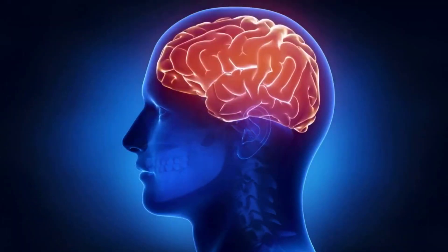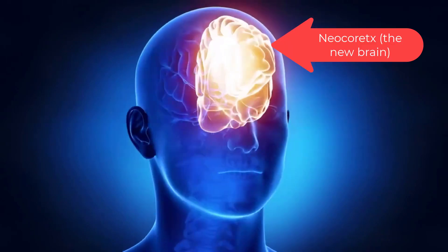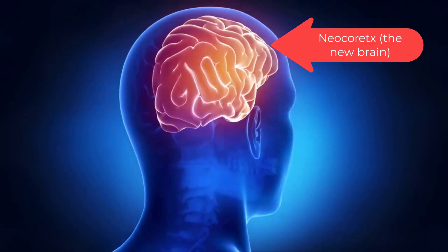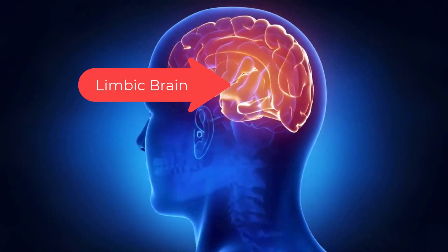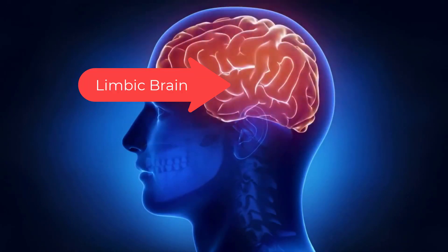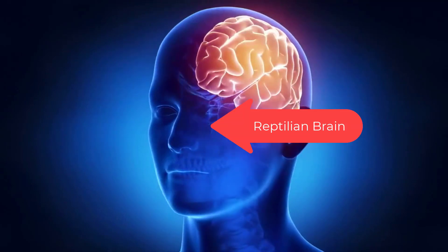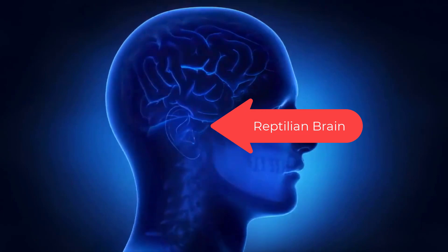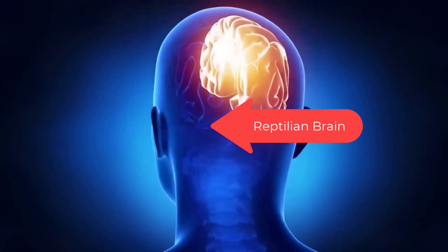Your brain has three basic layers and only one real decision maker. The new brain, the neocortex, thinks and processes rational data. The middle brain, the limbic brain, feels emotions and is our instinct — fight or flight response.